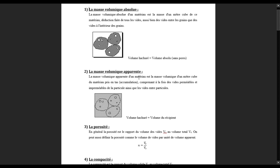Donc la masse volumique apparente du matériau est la masse volumique d'un échantillon du matériau pris en tas d'accumulation, comprenant à la fois des vides perméables et imperméables de la particule ainsi que les vides entre particules. La masse volumique apparente, c'est la masse qu'on arrive à voir, sans qu'on puisse déduire des vides, que ce soit intérieure ou extérieure — c'est ce qui apparaît devant nous lorsqu'on voit une roche.